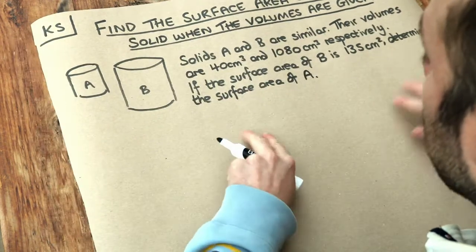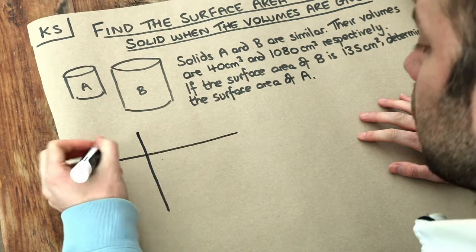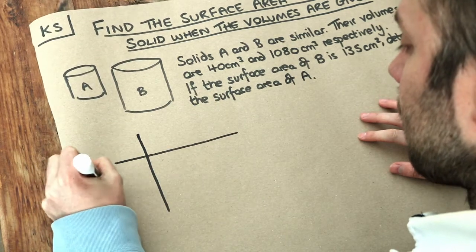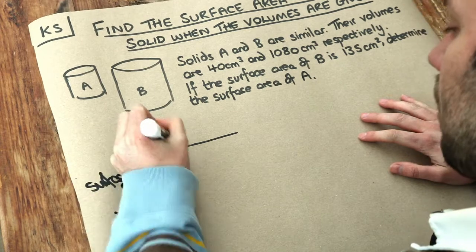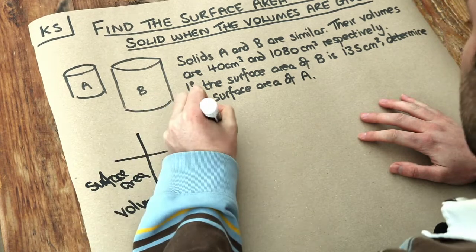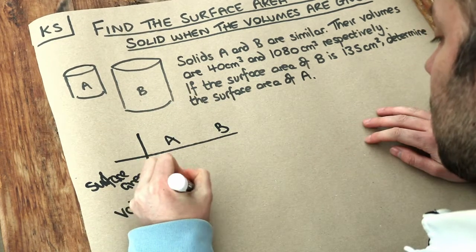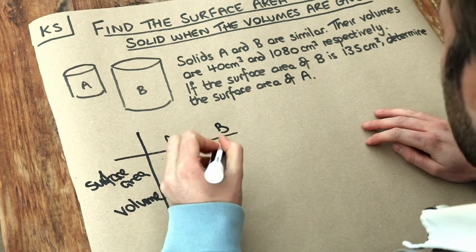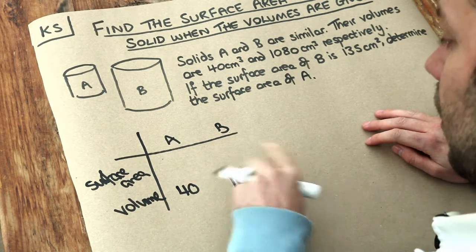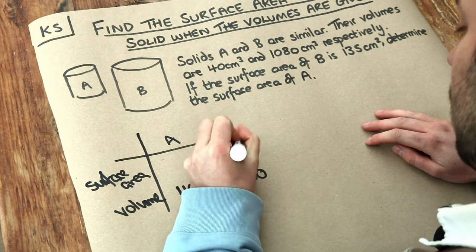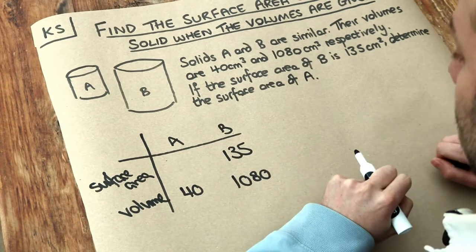Now for these problems we like to lay it out in a little table. So we've got the surface areas and the volumes for A and B. We're given the volumes of 40 centimeters cubed and 1080. We've got the surface area of B is 135 centimeters squared and we're trying to find the surface area of A.